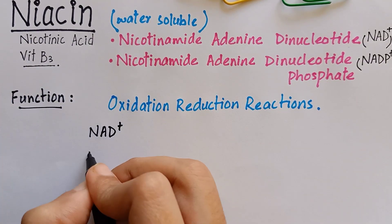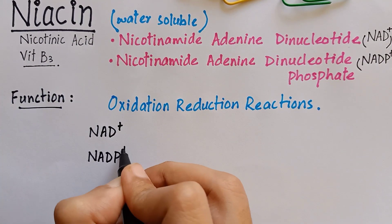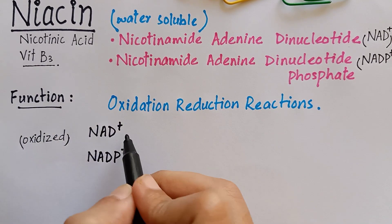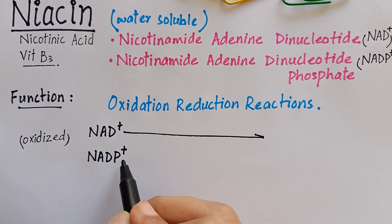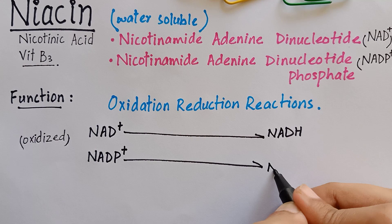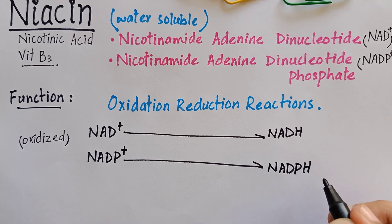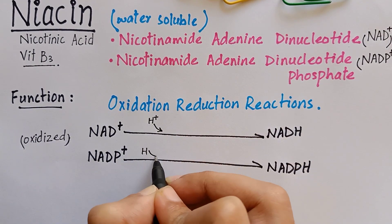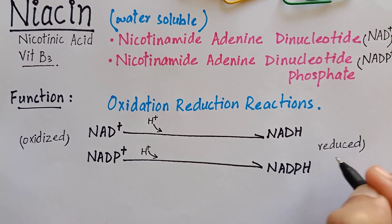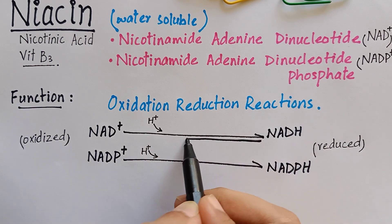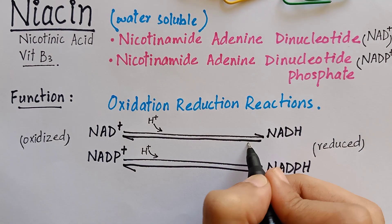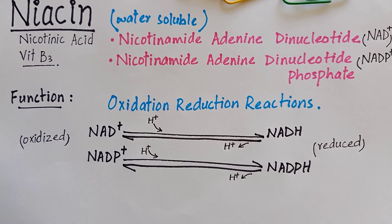They undergo reduction by accepting a hydrogen ion. The reaction is reversed when NADH and NADPH are oxidized. This reaction is very significant in carbohydrate, protein, and lipid metabolism.